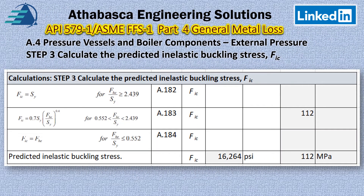The next step is calculating the predicted inelastic buckling stress. We have a number of relationships depending on different ratios of FEH over SY, the yield strength, and we have to look at each case. In our example, equation 183 applied because it met the required criteria, and we determine our inelastic buckling stress to be 112 megapascals or 16,264 psi.